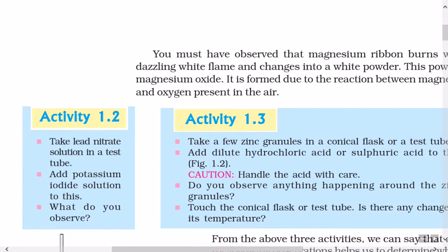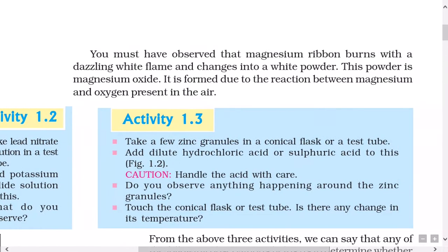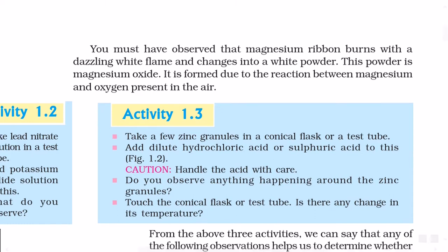Activity 1.2: Take lead nitrate solution in a test tube. Add potassium iodide solution to this. What do you observe? Activity 1.3: Take a few zinc granules in a conical flask or a test tube. Add dilute hydrochloric acid or sulfuric acid to this. Caution, handle the acid with care. Do you observe anything happening around the zinc granules? Touch the conical flask or test tube. Is there any change in its temperature?